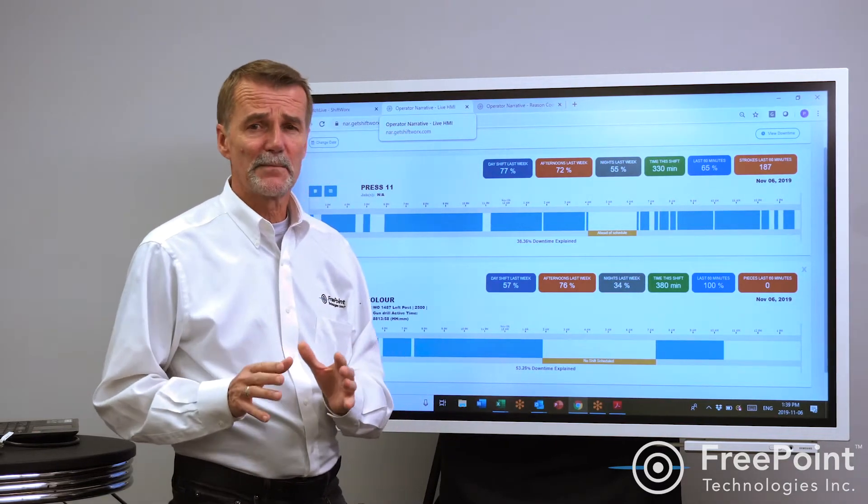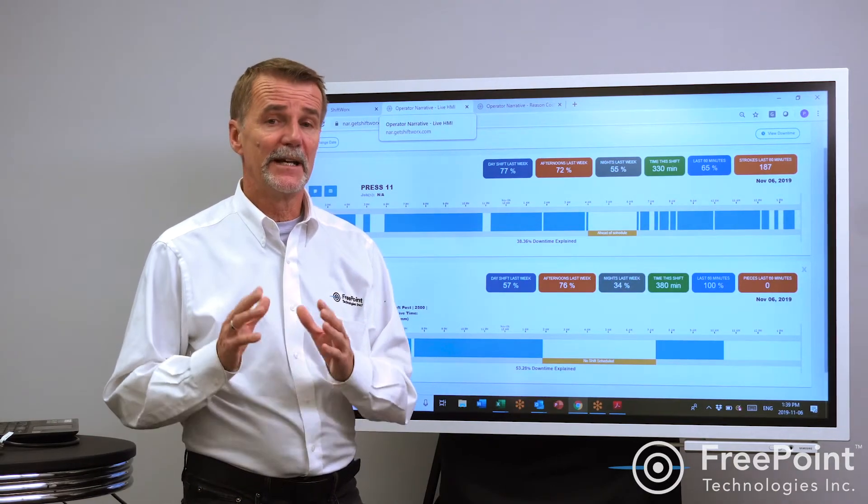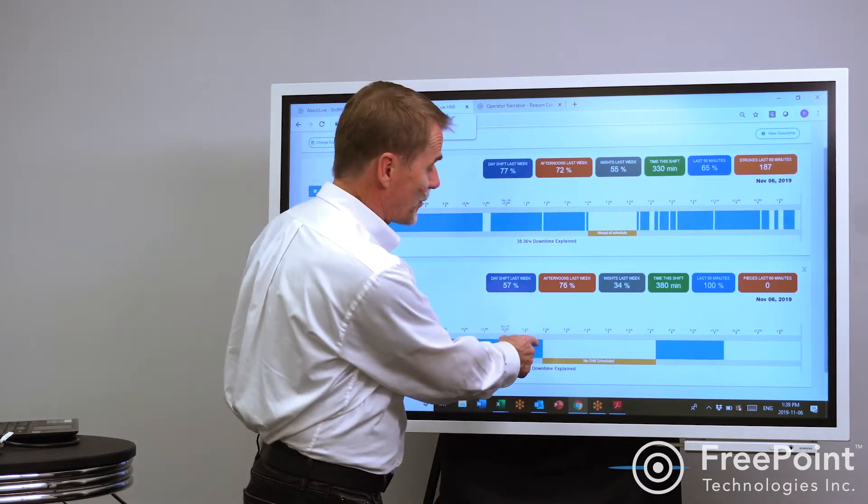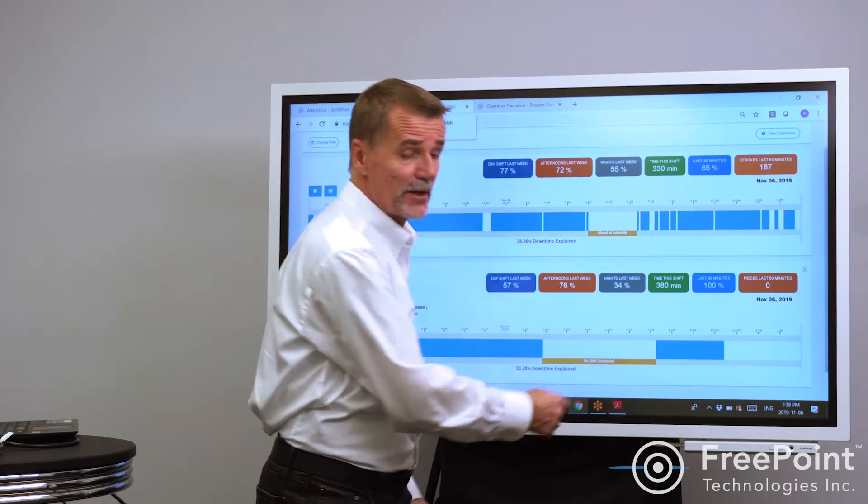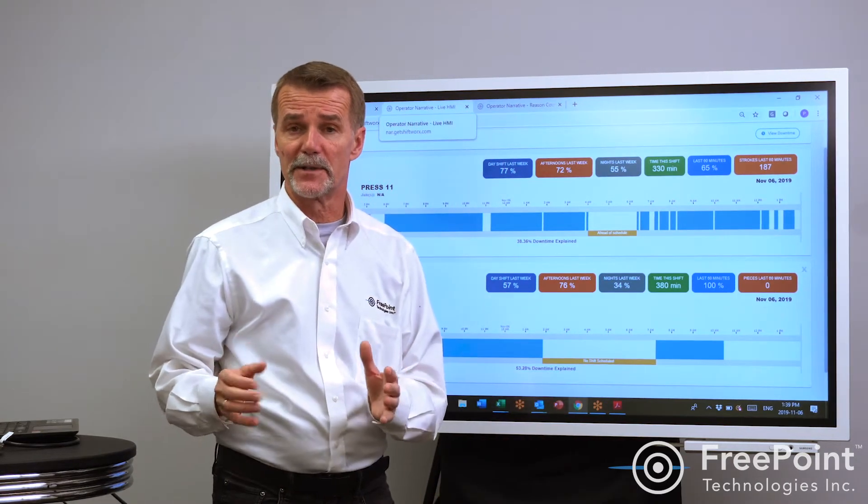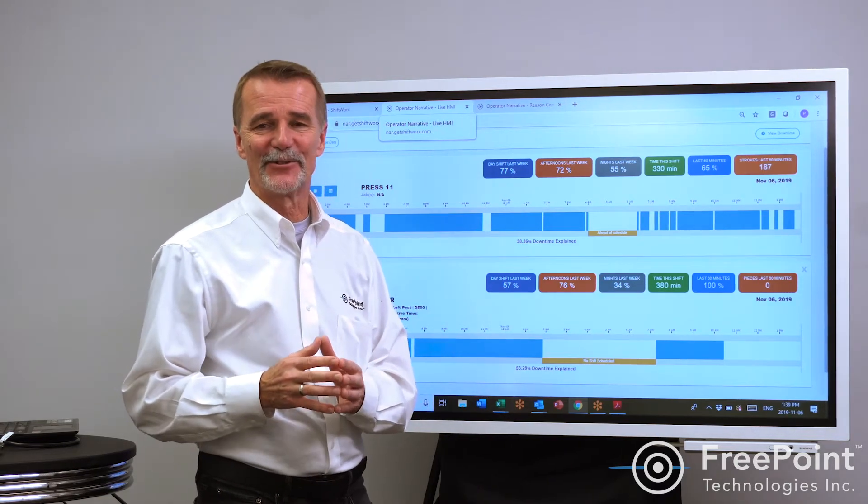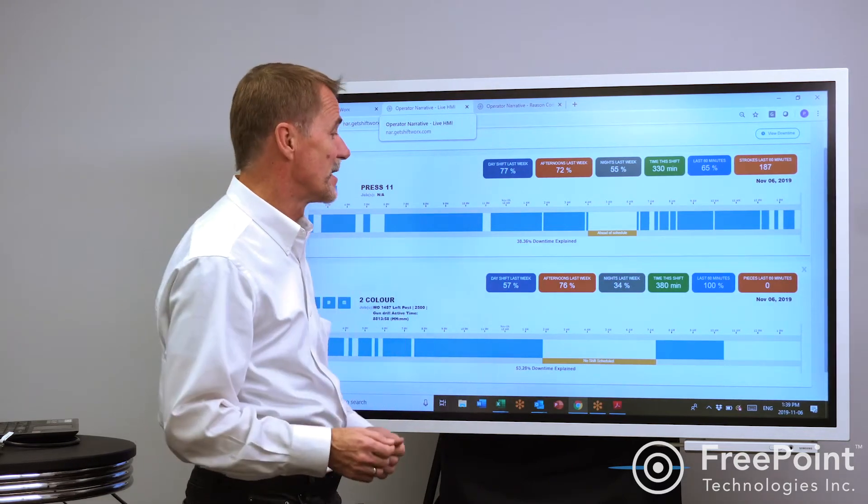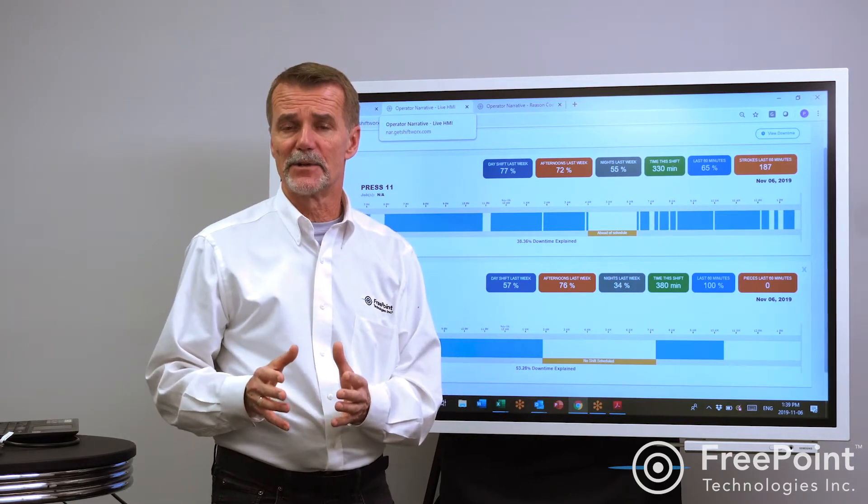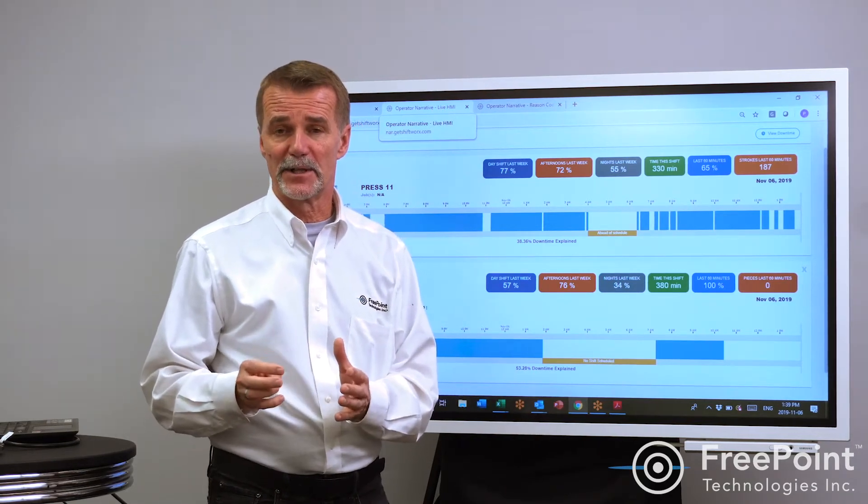Now some folks might think that this is not accurate or not empirical. It is accurate. The length of time when the machine went down to when the machine started again has been captured. It's not interpretive. It's not open for conversation or negotiation. It is what it is. The operator then has the opportunity to say why the machine went down.